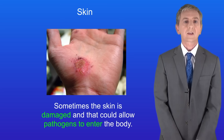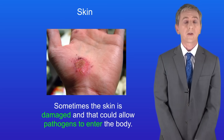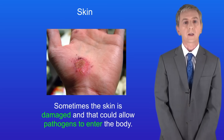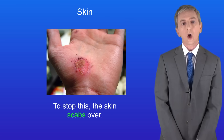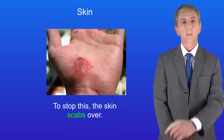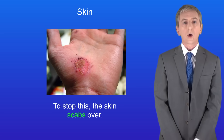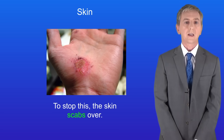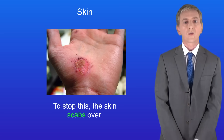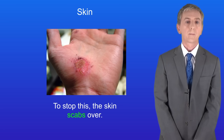Sometimes the skin is damaged, and that could allow pathogens to enter the body. To stop this, the skin scabs over. Now there are some parts of the body which are not covered by the skin — good examples include the nostrils and the mouth.